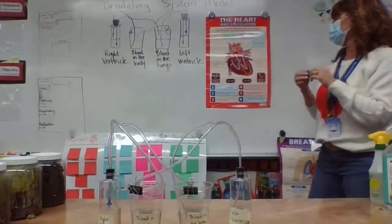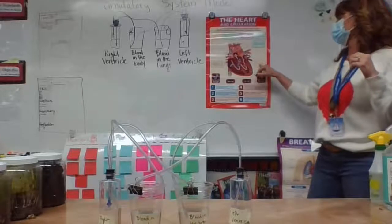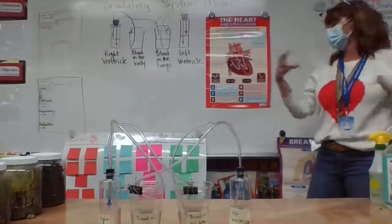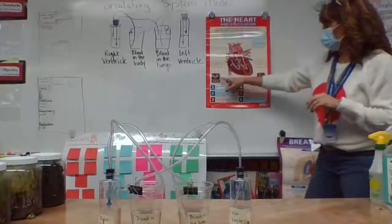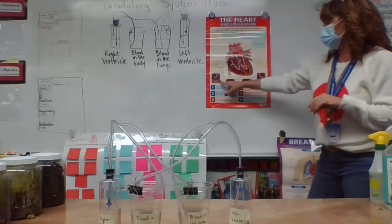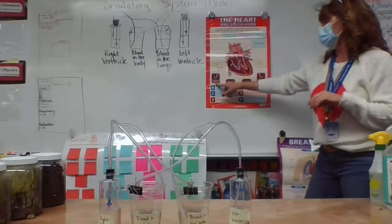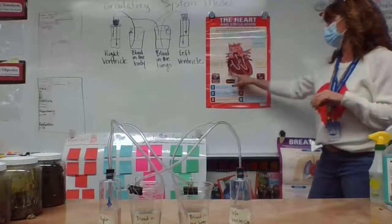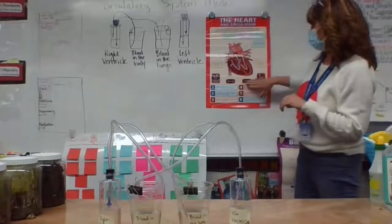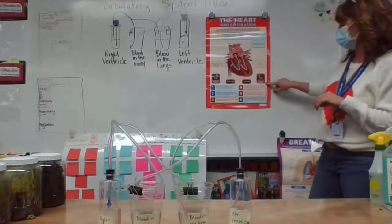Veins carry blood from the body to the heart. So on the right side here, deoxygenated blood from the body enters. And on the left side, oxygenated blood from the lungs.